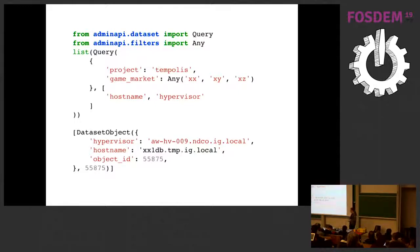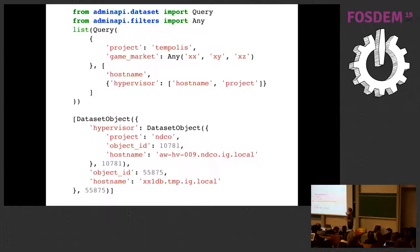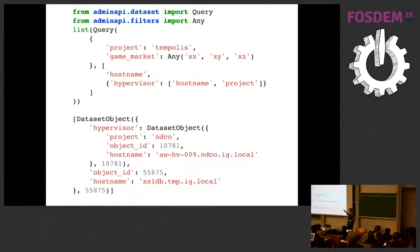You can also do joins in your query. Here we request hostname and hypervisor, but hypervisor is in its own dictionary with a list of attributes — so we join matched servers on their hypervisor attribute and from that hypervisor get hostname and project. In the result, the hypervisor attribute no longer just returns a string but a full data set object with its own attributes.